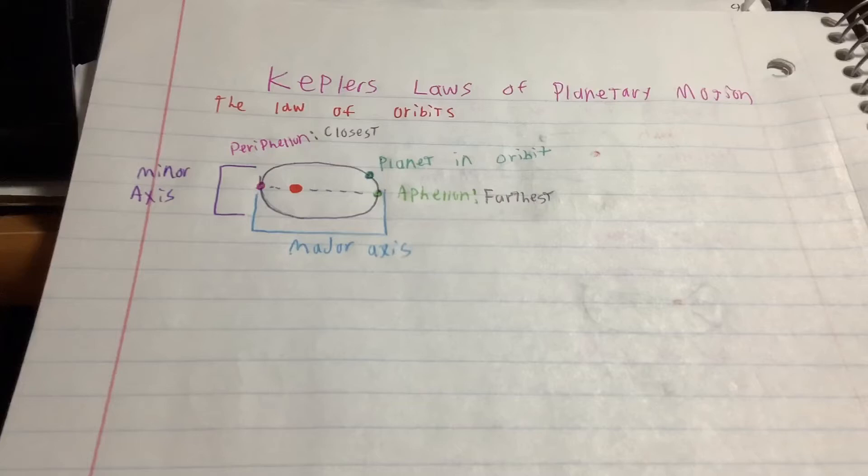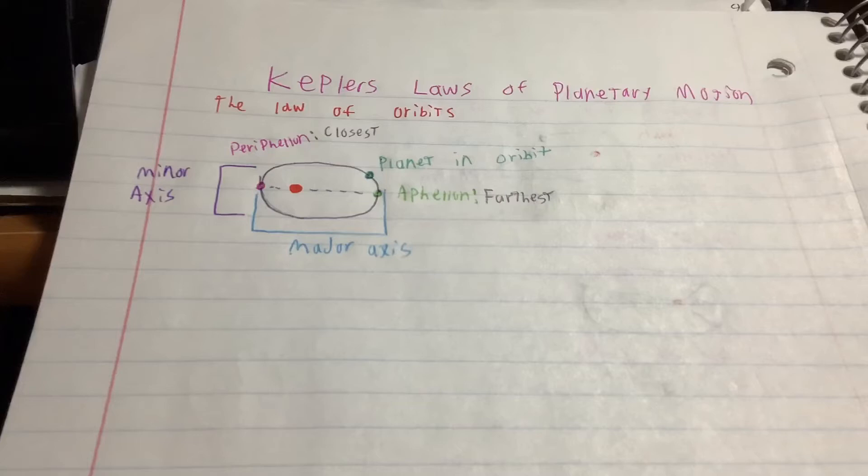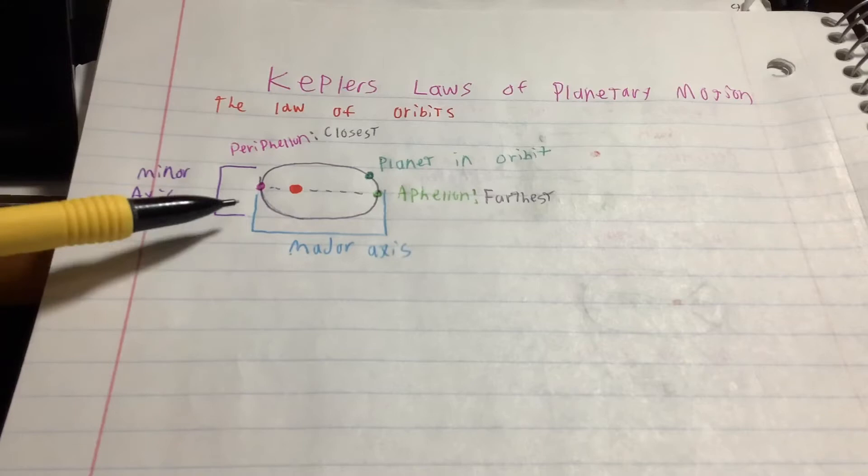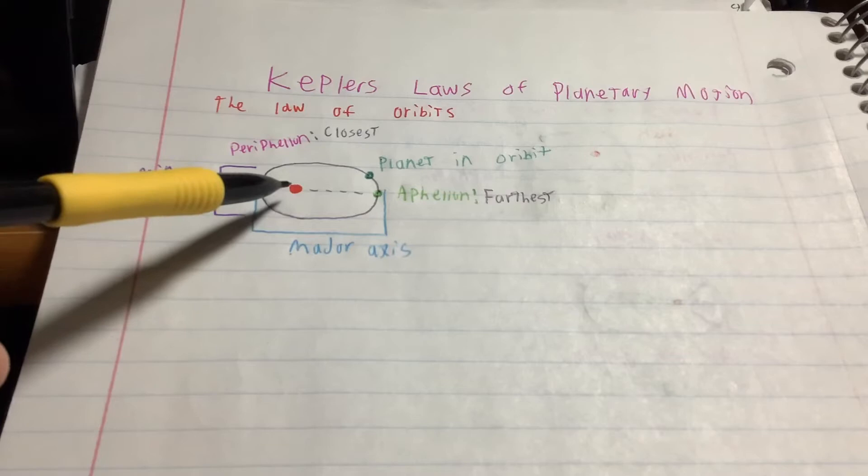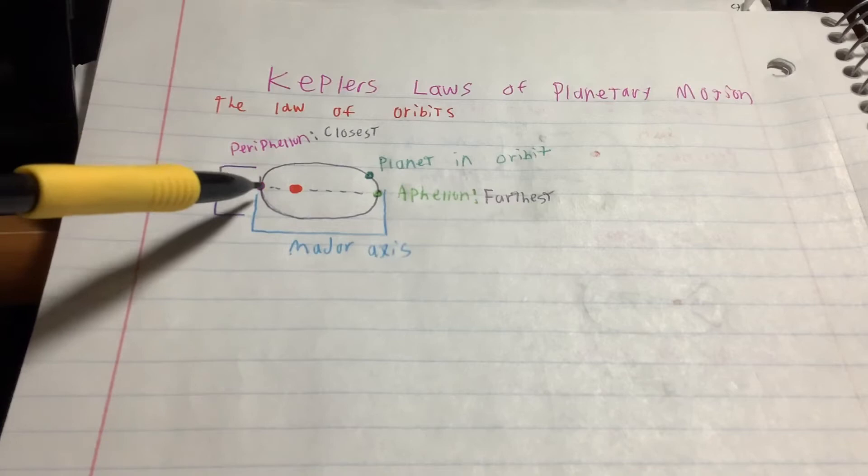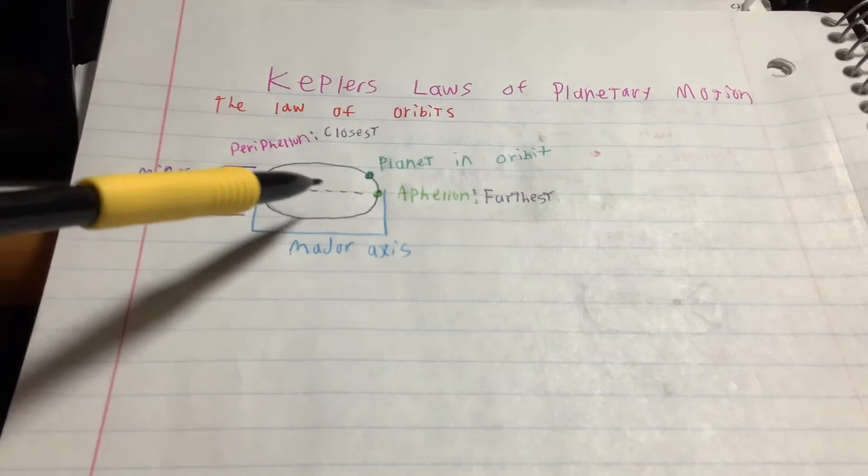Here we can see the first law of orbits in this diagram. First we have the minor axis which is the shorter side of the orbit and the major axis the longer way. It's elliptical in shape, not an exact circle. The Sun is at one focus. Along this elliptical path we have the perihelion which is the closest point to the Sun and the aphelion, the farthest point from the Sun.